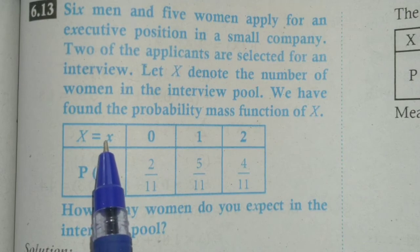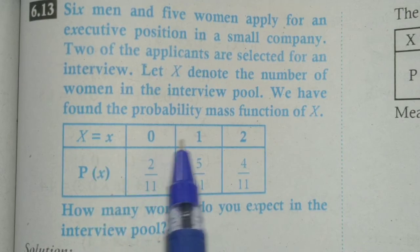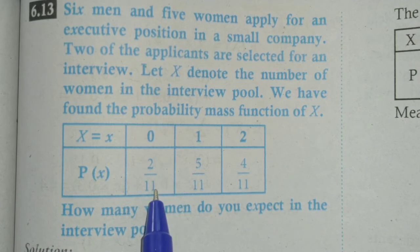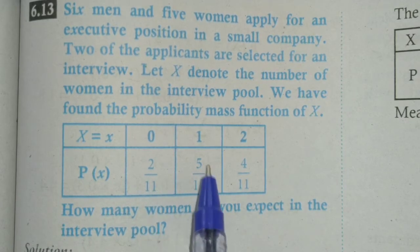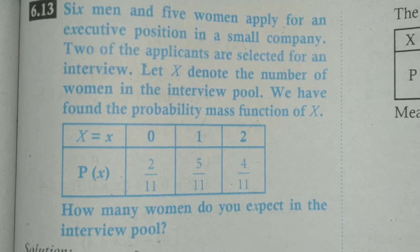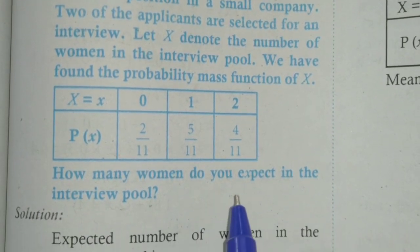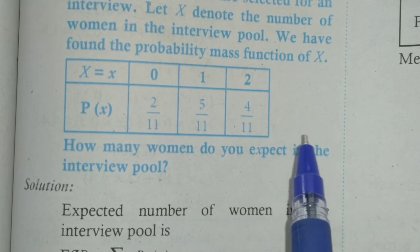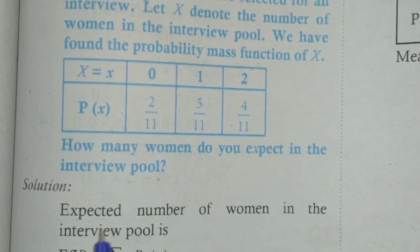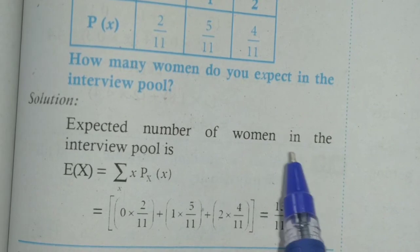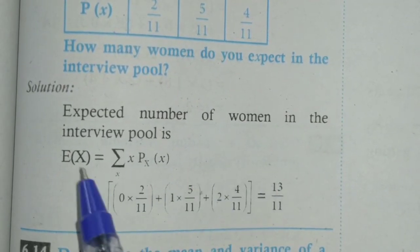Now x takes the values 0, 1, and 2. So P(x) is the probability mass function for the number of women in the interview pool. How many women do you expect in the interview pool? E means expected value.